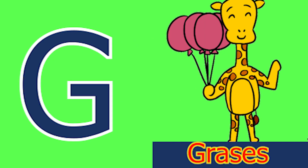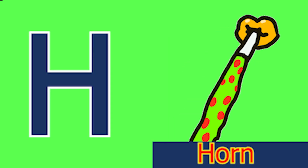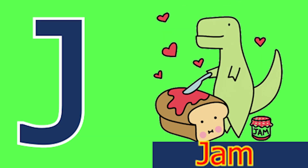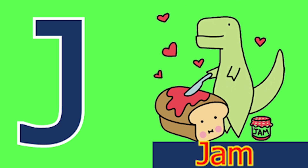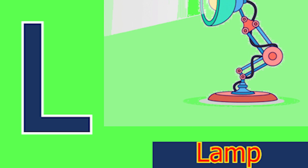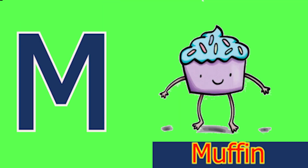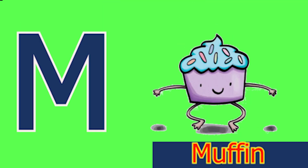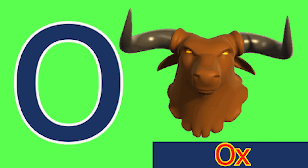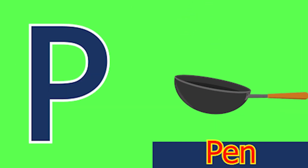G for glass and H for horn. I for insect, J for jam, K for kite, L for lamb, M for mud, N for nose, O for ox and P for pan.